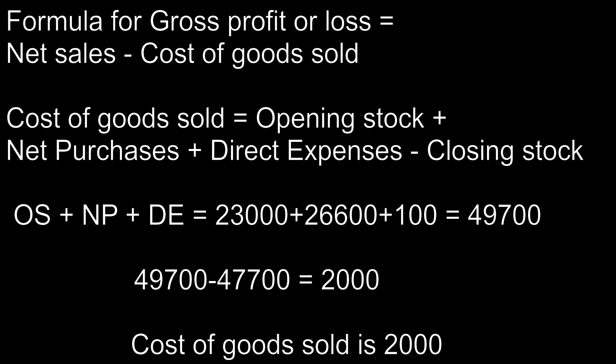The formula for gross profit or gross loss is net sales minus cost of goods sold. Cost of goods sold equals opening stock plus net purchases plus direct expenses minus closing stock. Opening stock 23,000 plus net purchases 26,600 plus direct expenses 100 totals 49,700. Our closing stock is 47,700, which should be deducted from 49,700, giving 2,000. So 2,000 is our cost of goods sold.